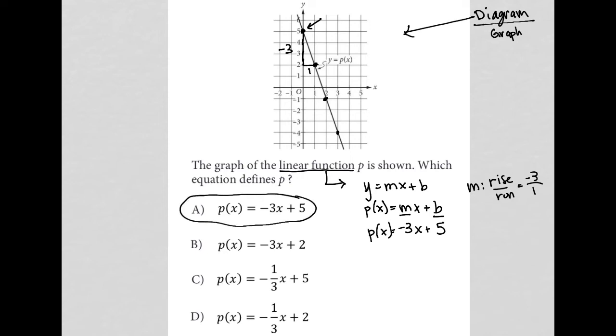But I could also just as easily have said, if I know that I have this ordered pair right here, which says that when x is 3, y should equal negative 4, I can take those two numbers and plug them into my equation. So for answer choice A, I'd replace P of x with negative 4, because P of x and y are the same thing. I replace this x here with a positive 3. And then I just check it out. Now, is it true that negative 3 times positive 3, which is negative 9, plus 5 is equal to negative 4? Yes, it is. Negative 9 plus 5 does, in fact, equal negative 4.